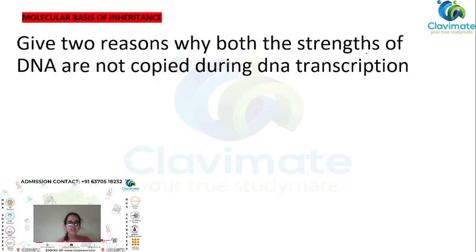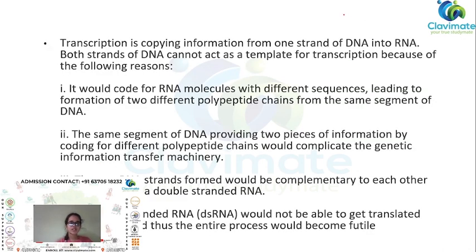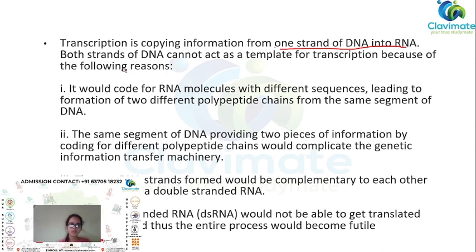Why are both strands of DNA not copied during transcription? Transcription is the process of copying information from one strand of DNA into RNA. The reason both strands cannot act as a template is: if both strands acted as a template, they would code for RNA molecules with different sequences, leading to the formation of two different polypeptide chains from the same segment of DNA.